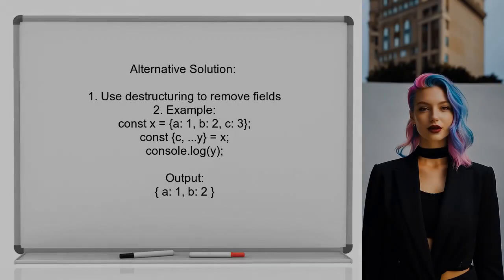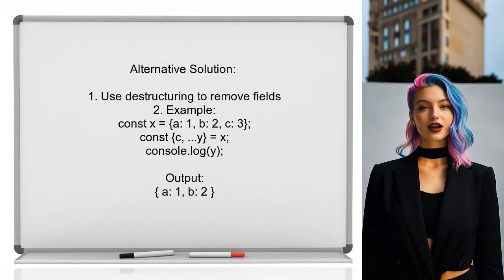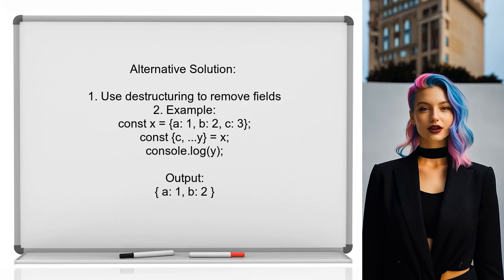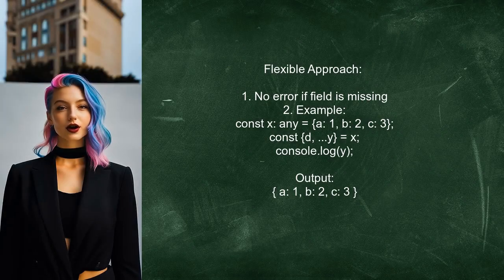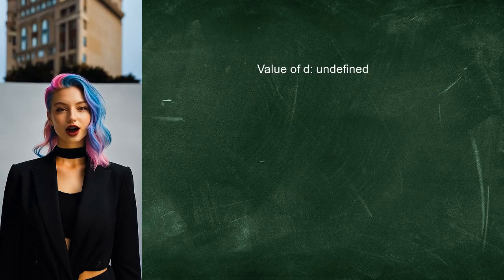Another approach involves destructuring an object to remove unwanted fields. For example, if you have an object with fields A, B, and C, you can create a new object that only includes A and B by using destructuring syntax. This method is flexible — if the field you want to remove doesn't exist, like field D in this example, it won't throw an error. Instead, D will simply be undefined.